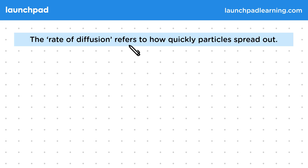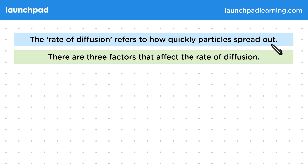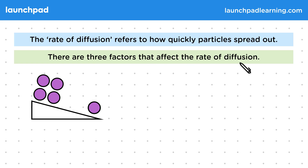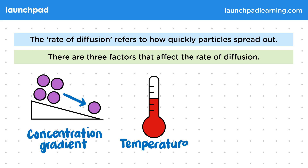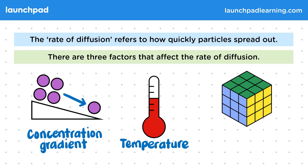The rate of diffusion refers to how quickly particles spread out. There are three factors that affect the rate of diffusion: first is the concentration gradient, next we have temperature, and finally the surface area of the membrane.